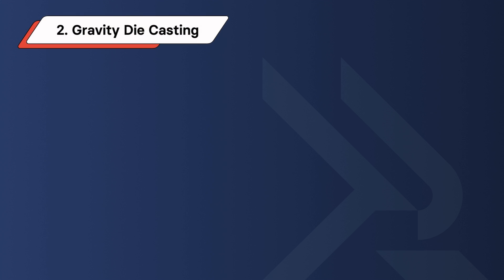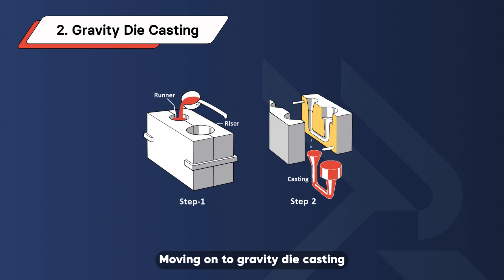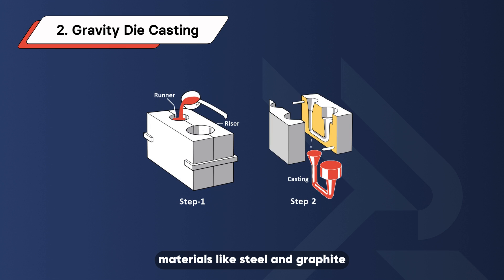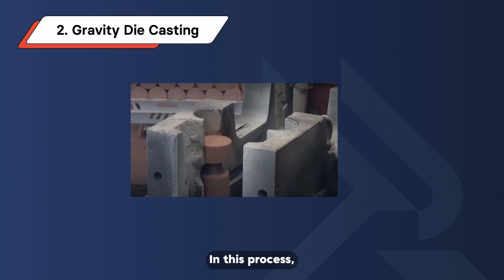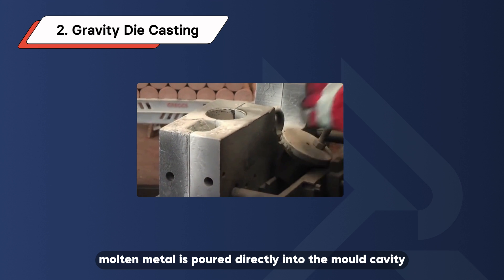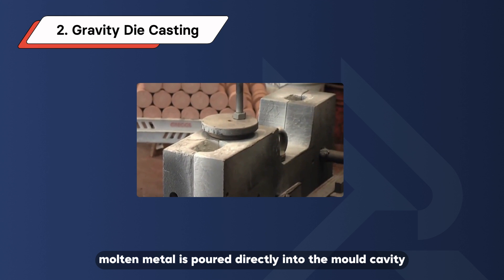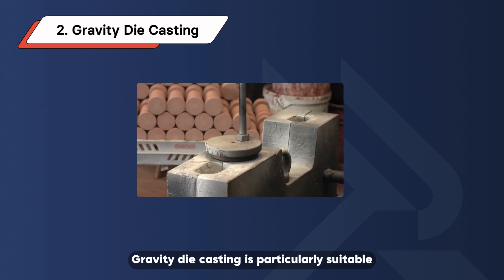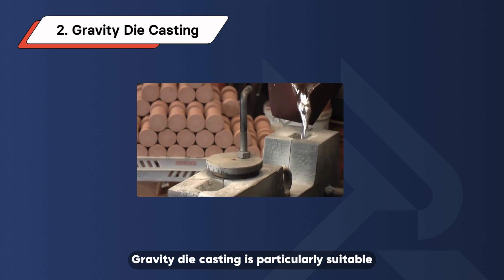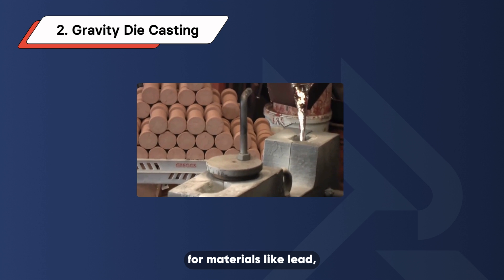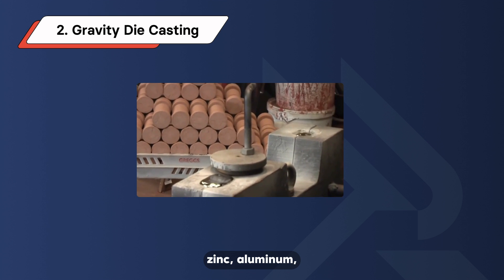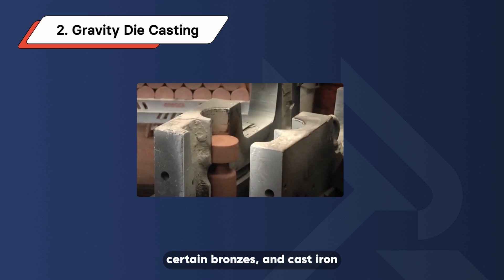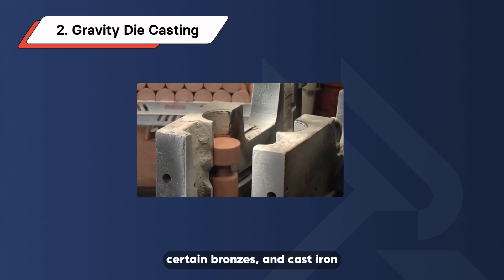Gravity Die Casting. Moving on to gravity die casting, which employs reusable molds made of sturdy materials like steel and graphite. In this process, molten metal is poured directly into the mold cavity under the influence of gravity. Gravity die casting is particularly suitable for materials like lead, zinc, aluminum, magnesium alloys, certain bronzes, and cast iron.